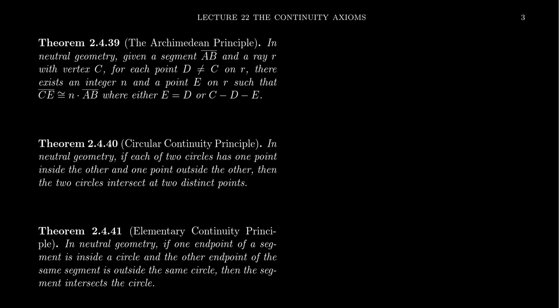When we talk about the postulate of line completeness, it was framed in the following manner — this is a quote from Wallace and West's Roads to Geometry textbook: 'An extension of a set of points on a line with its order and congruence relations that would preserve the relations existing among the original elements as well as the fundamental properties of line order and congruence that follow from axioms 1 through 3 and 5 is impossible.' That's really an impregnable axiom. By contrast, you can see why Dedekind's axiom is much more approachable. Hilbert took two axioms of continuity: that the real line is complete, and the Archimedean principle.